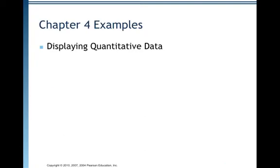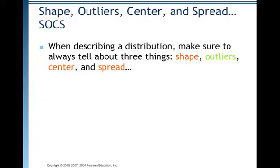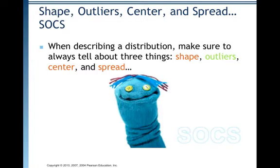We're about to do examples displaying quantitative data. Think before you draw — remember the make-a-picture rule. Now that we have options for data displays, think carefully about which type to make. Remember to use the stem-and-leaf display and histogram only for quantitative data. The dot plot can be used with categorical data but is certainly usable for quantitative data as well. Consider the shape, outliers, center, and spread — remember SOCS.